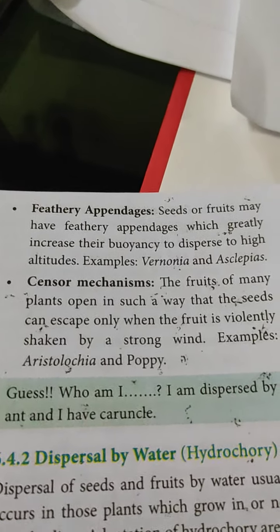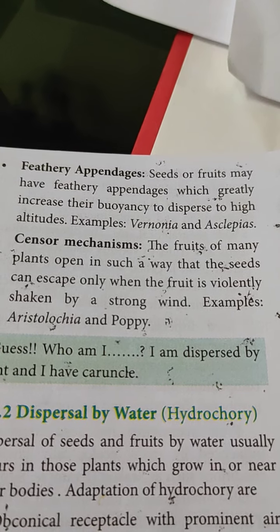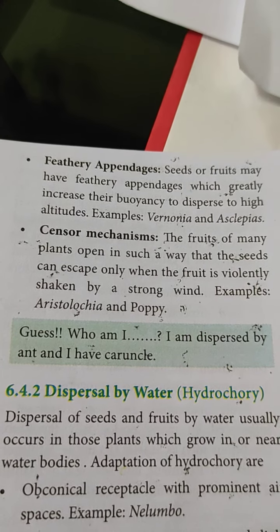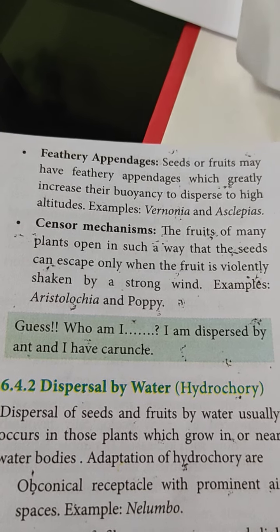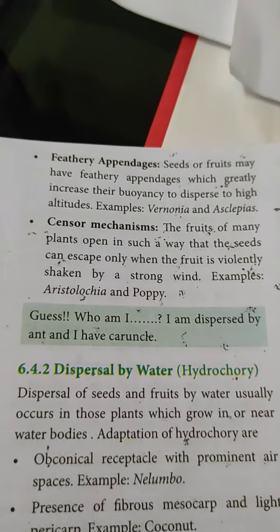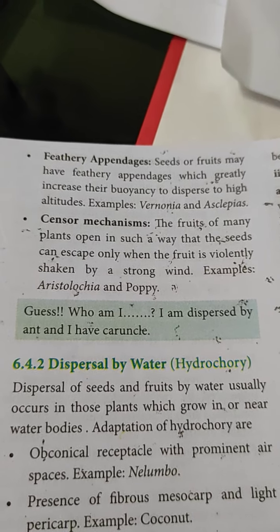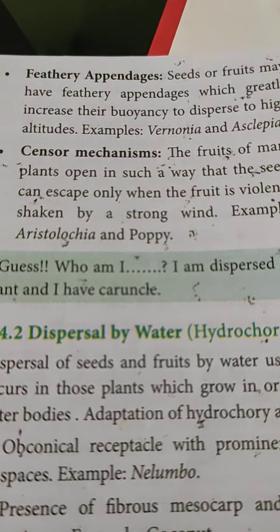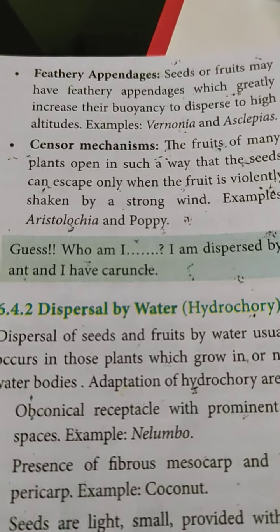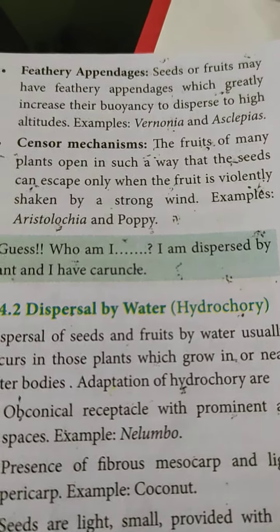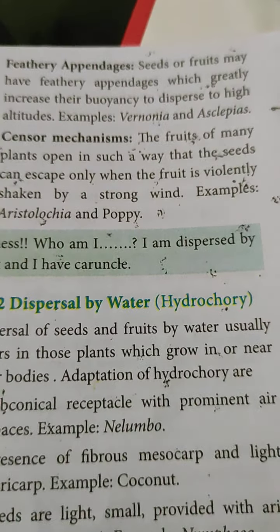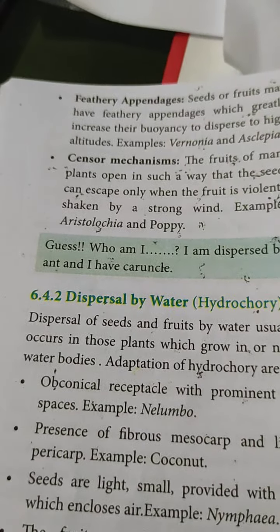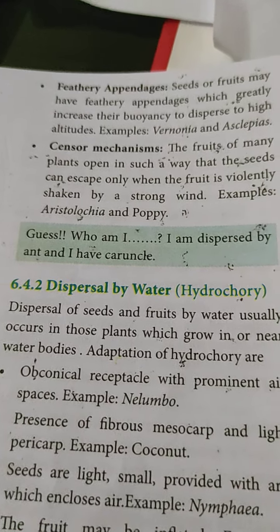The fourth adaptation is the sensor mechanism. The fruits of many plants open in such a way that seeds can escape only when the fruit is violently shaken by strong wind, causing bursting. The strong wind is responsible for breaking the fruit coat so the seeds come out. Examples: Aristolochia and Poppy.